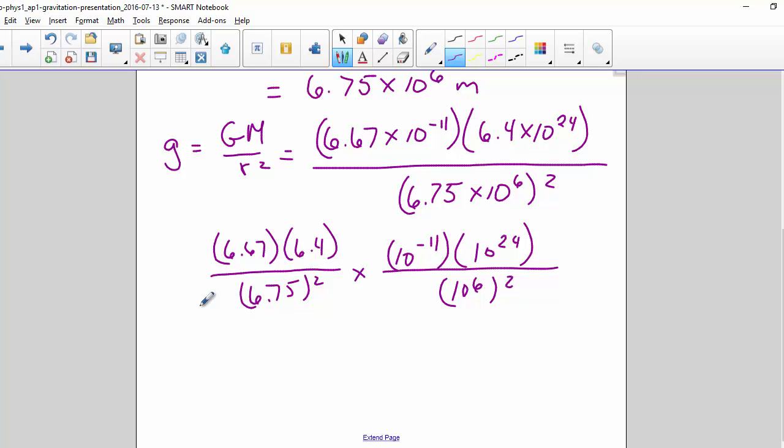So here we get 0.88, and here we get 10 to the 1. So it becomes 8.8 meters per second squared.